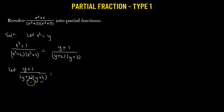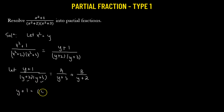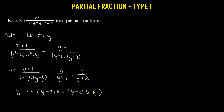Two partial fractions, because we have two factors: (y + 2) and (y + 3). So let's consider the first partial fraction to be A / (y + 3) and the second one as B / (y + 2). We multiply throughout by (y + 2)(y + 3), so we get y + 1 on the left-hand side, and on the right-hand side we have A(y + 2) + B(y + 3). Let's label this as equation 2.